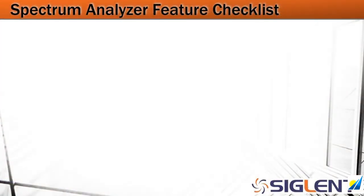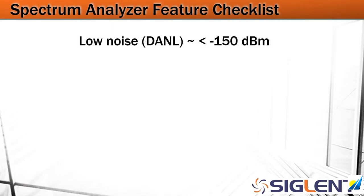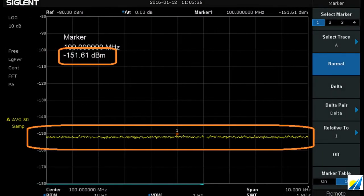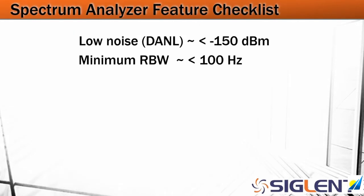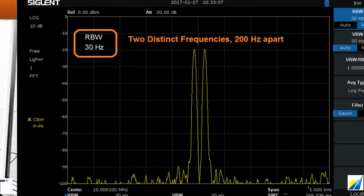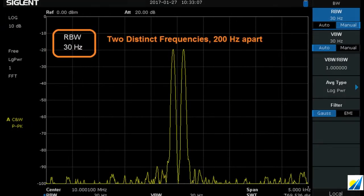Here's a quick checklist of spectrum analyzer features that may be helpful as you search for your instrument. You're going to want to look for a low noise floor or DANL — that's displayed average noise level. If you're in the minus 150 dBm range, that's going to be helpful for finding very small spurs and harmonics. Also look for a minimum resolution bandwidth of around 100 Hz or less.